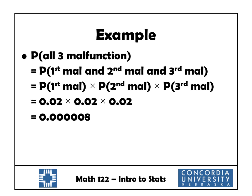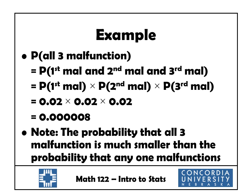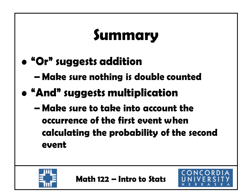That's really the whole point: the probability that all three malfunction is much smaller than the probability that any one malfunctions. That's the whole idea behind redundancy. To summarize these rules: if we see the word OR inside our parentheses, that suggests addition, but we have to make sure that nothing is double counted. If I see the word AND, that suggests multiplication, but I have to make sure to take into account the occurrence of the first event when calculating the probability of the second event.